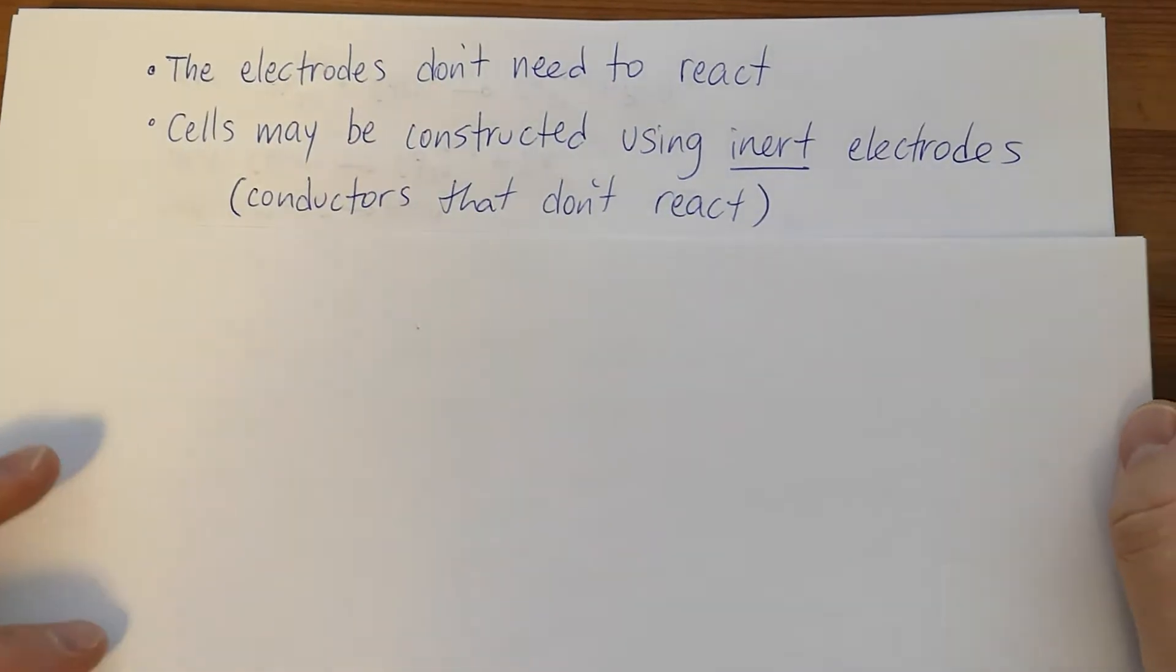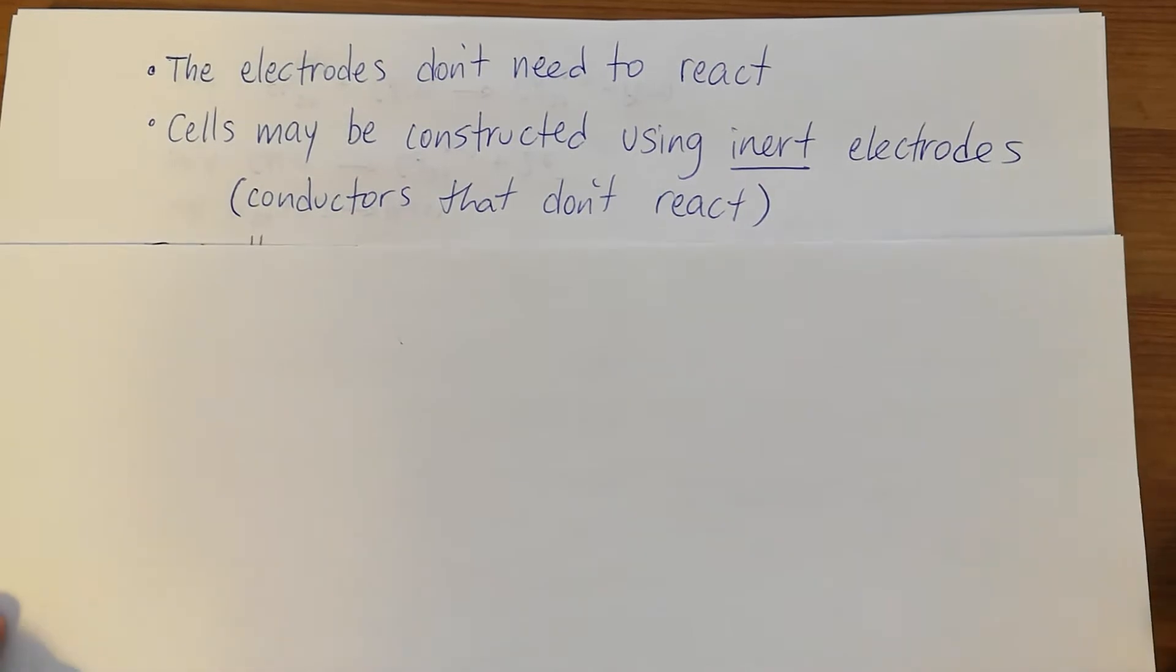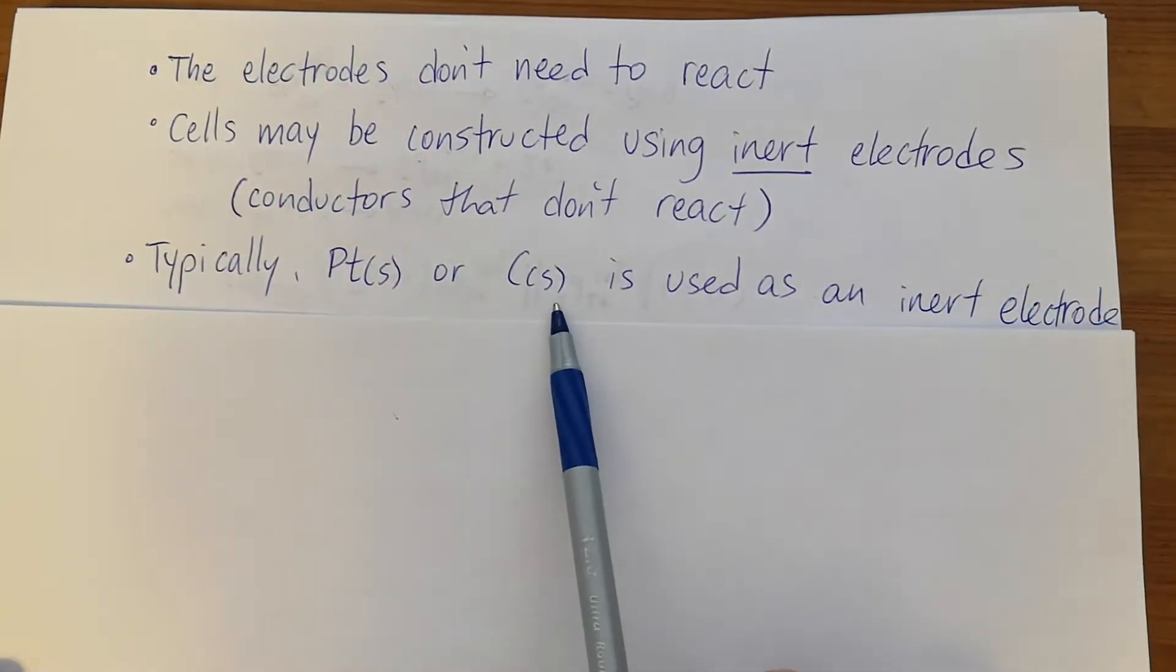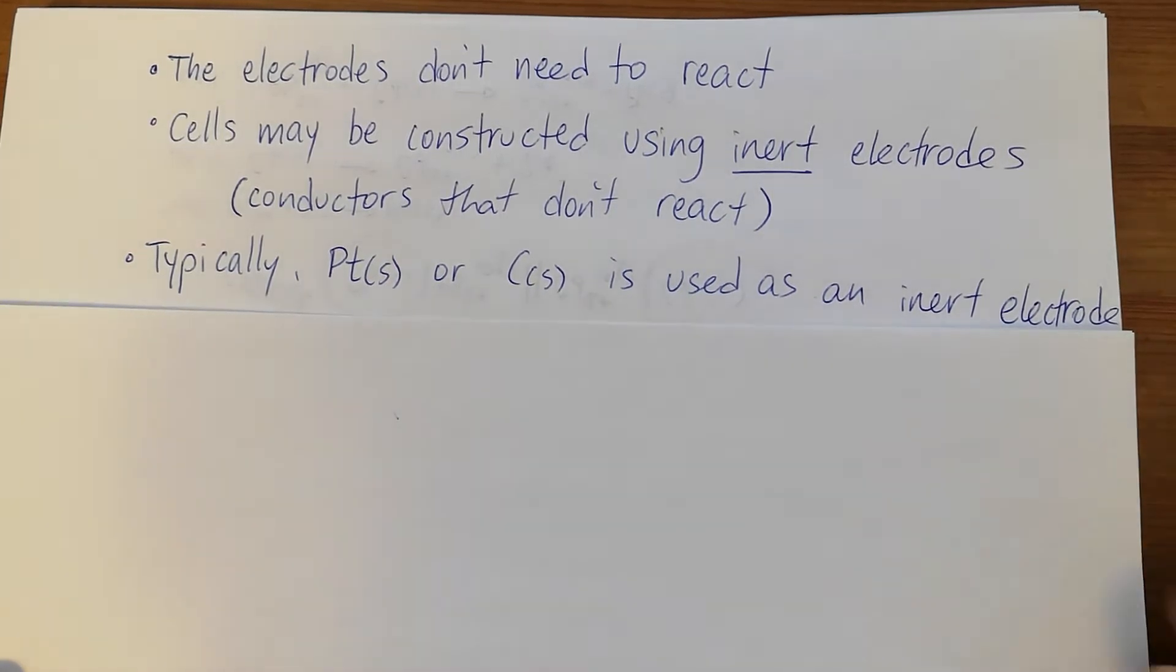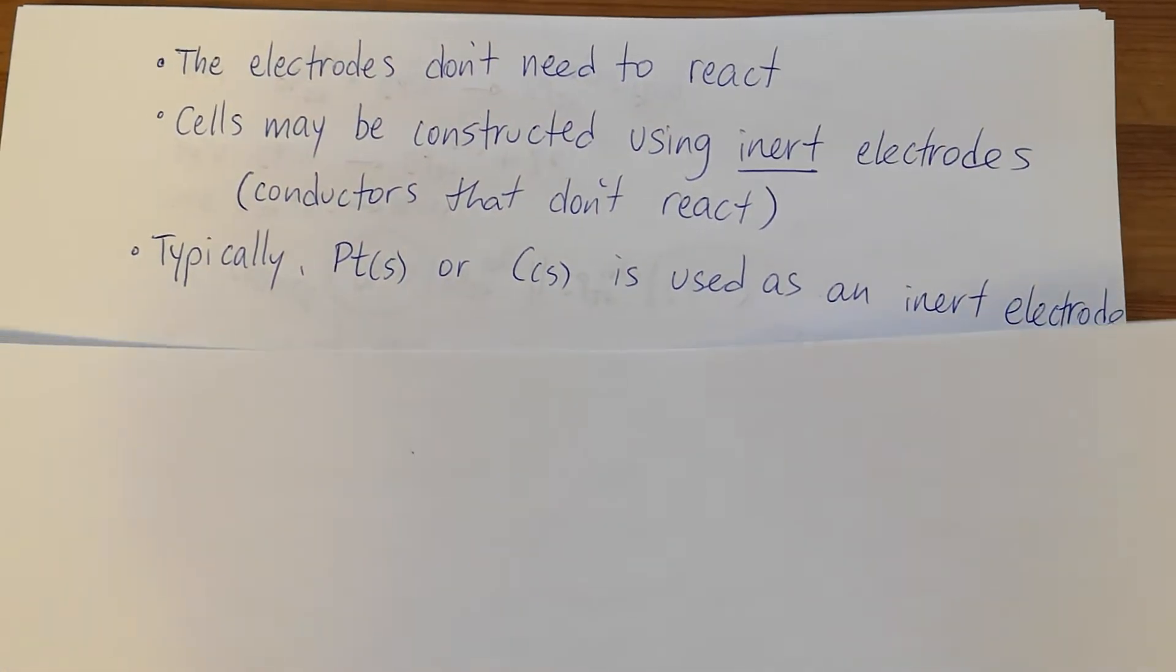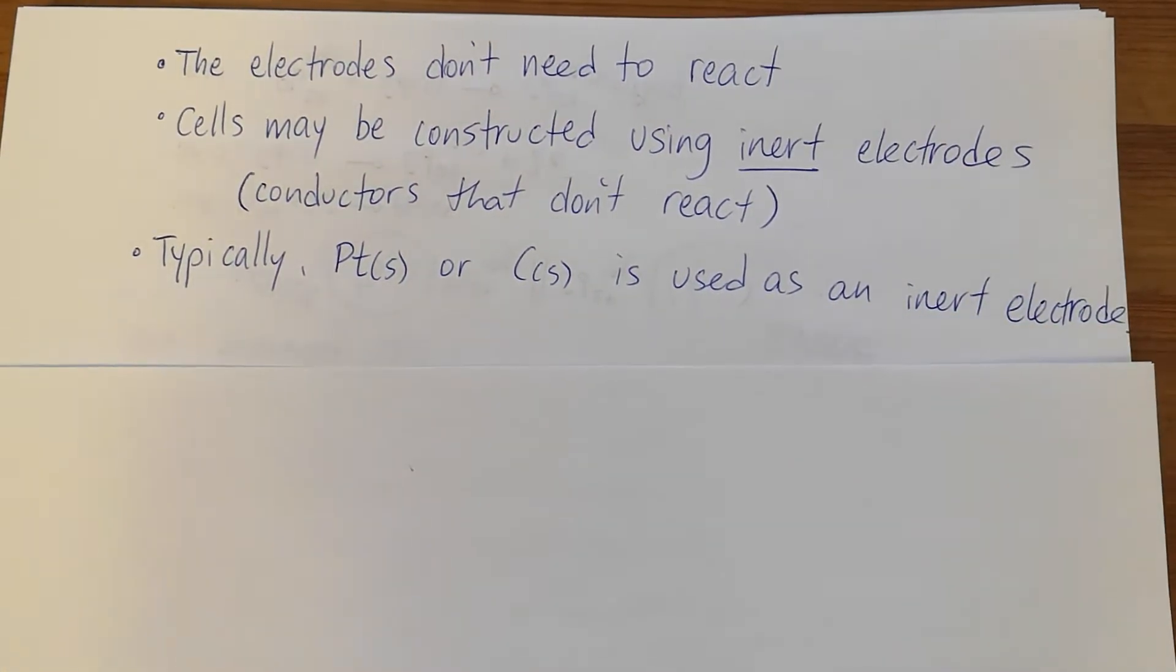Cells can be constructed using electrodes that don't even have a chance to react. These are inert electrodes. They have to be conductors, and we usually use platinum or carbon. So if you see platinum or carbon in cell notation, do not look for them in the redox table because you're not going to find them. They're just being used as an electrode to provide a surface for redox to occur.